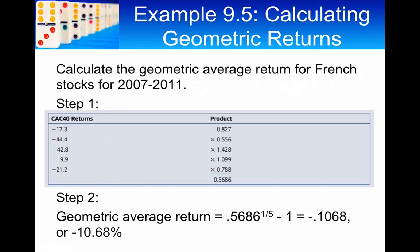Now, we've got to take the tth root. In this case, t is equal to 5 because there are five observations. So, the fifth root of 0.5686, and you take one off of that fifth root, is equal to minus 0.1068, which is minus 10.68%.